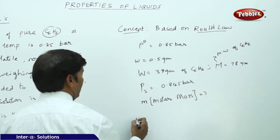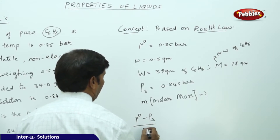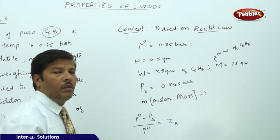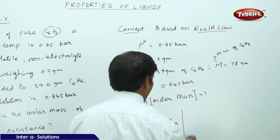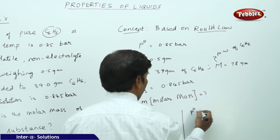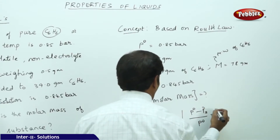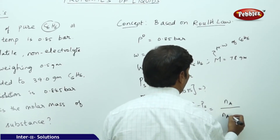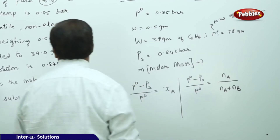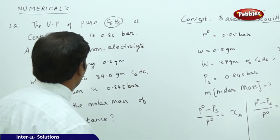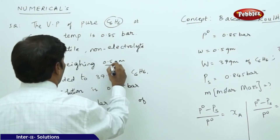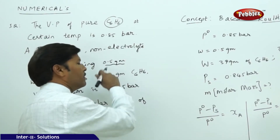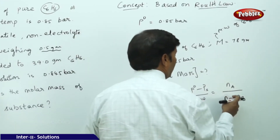Applying Raoult's law: (P₀ - PS) / P₀ = XA, where XA is the mole fraction of the solute. This can be written as (P₀ - PS) / P₀ = moles of solute / (moles of solute + moles of solvent). Since the solute is very dilute — only 0.5 grams compared to 39 grams — we can ignore moles of solute in the denominator.